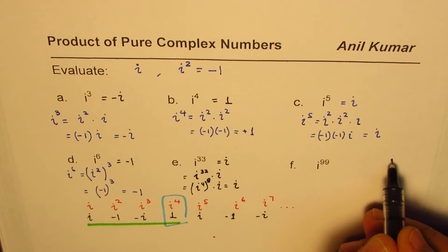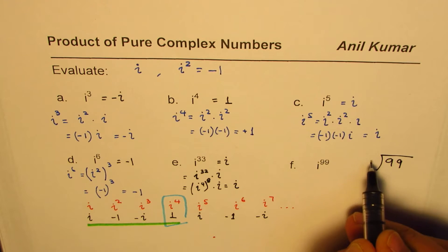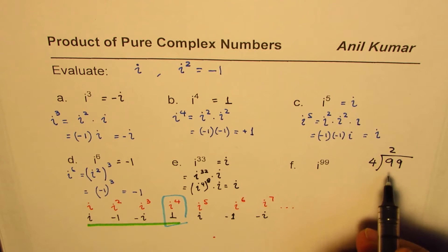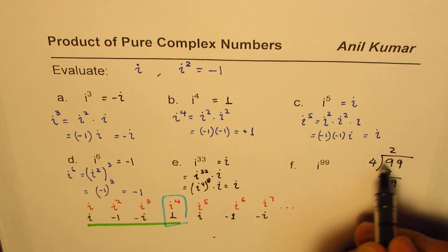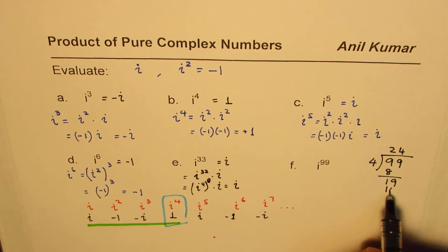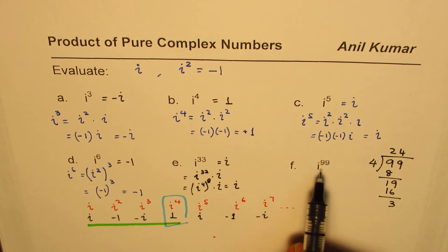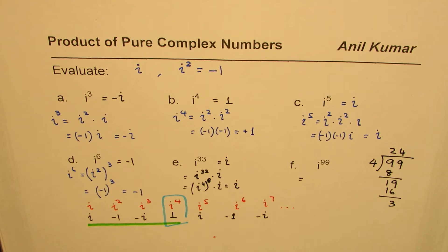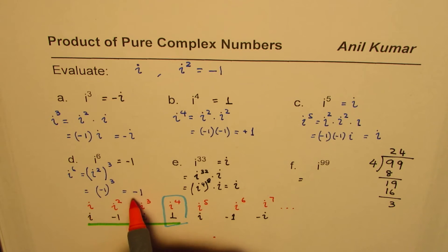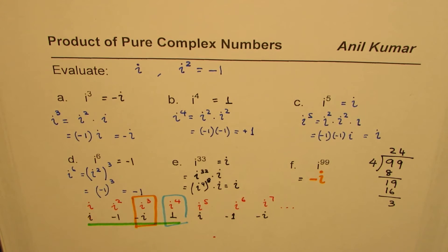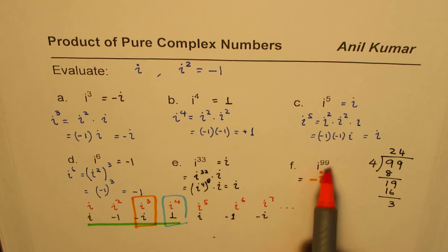Let's do i to the power of 99. Divide 99 by 4: 4 times 24 is 96, leaving a remainder of 3. A remainder of 3 means we look at the third term in our repeating pattern — i, minus 1, minus i — so the third term is minus i. Therefore i to the power of 99 equals minus i.